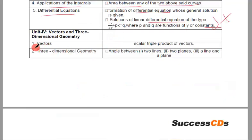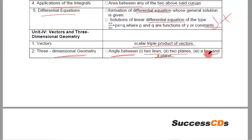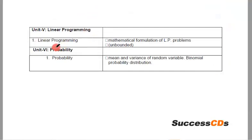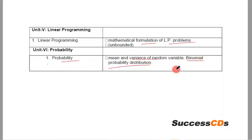From Vectors: scalar triple product of vectors is deleted. From 3D Geometry: angle between two lines, two planes, and a line and a plane is deleted. From Linear Programming: mathematical formulation of LP problems and unbounded — both deleted. From Probability: mean and variance of random variable and binomial probability distribution have been deleted. So these are all the topics deleted from the Mathematics subject.